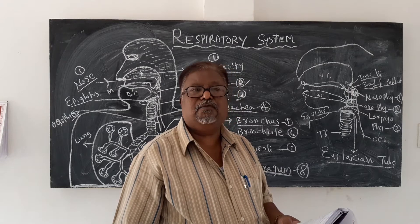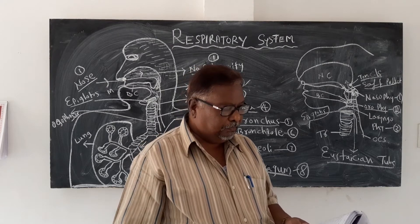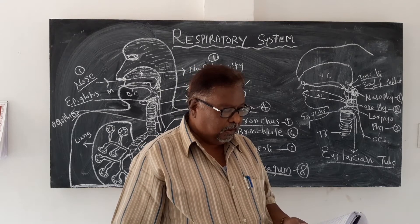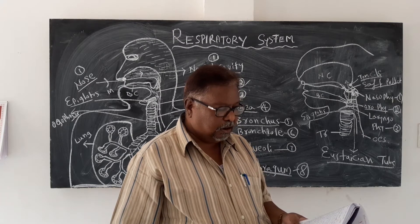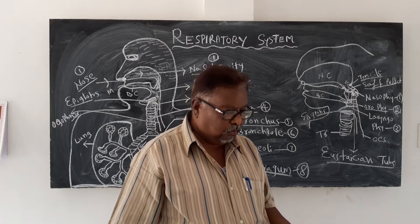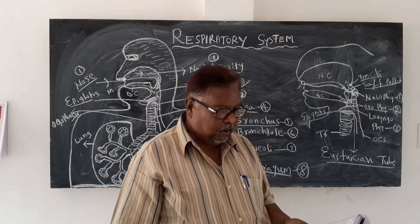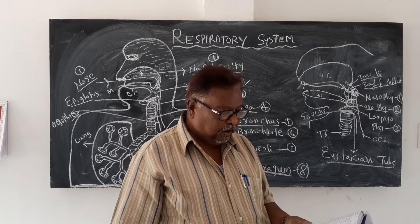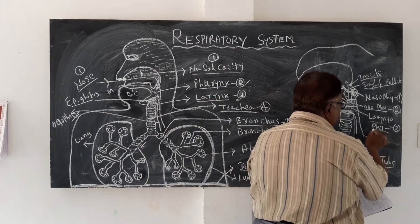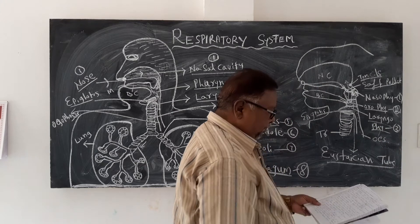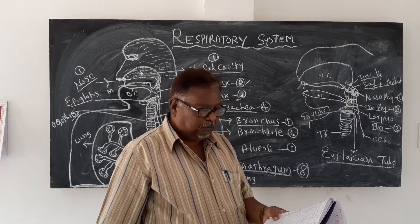Tonsils are lymphoid tissues. Lingual tonsils are present in the oropharynx. The tonsils are composed of lymphoid tissue and trap and destroy pathogens entering the body through oral and nasal cavities. The walls of the oropharynx are lined by stratified squamous epithelial cells.